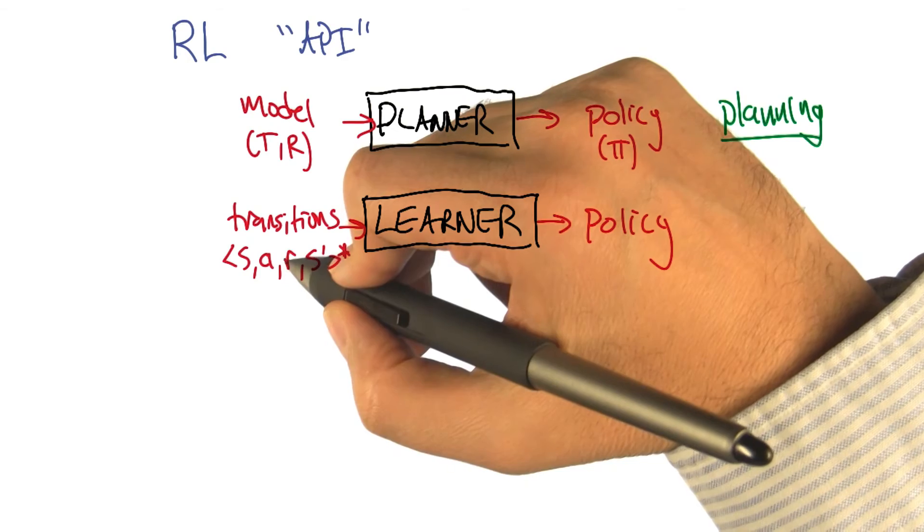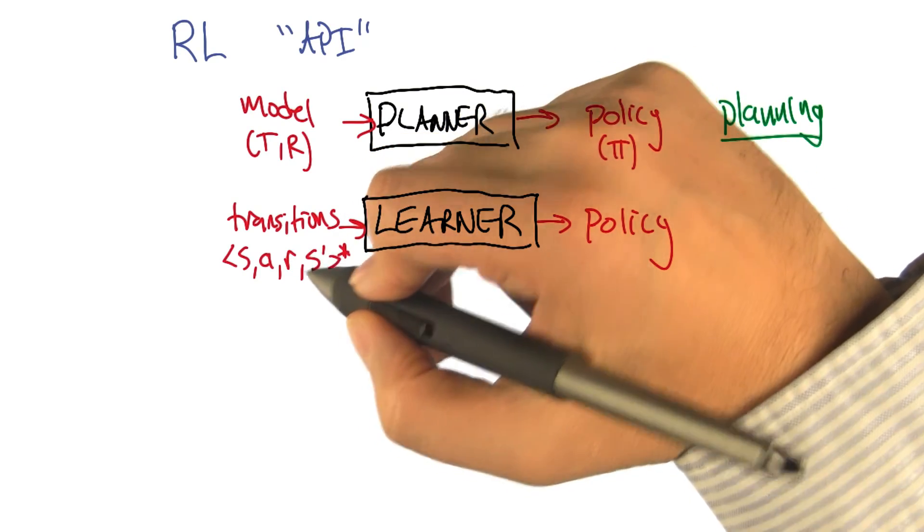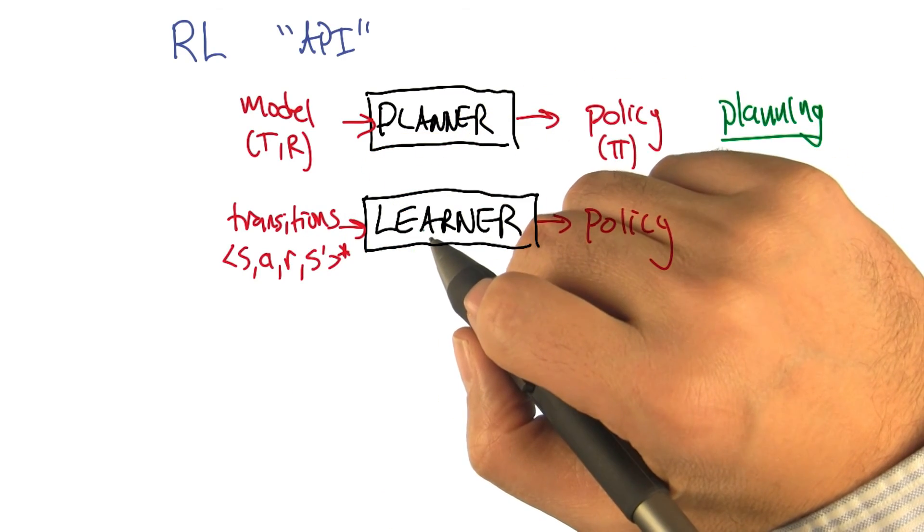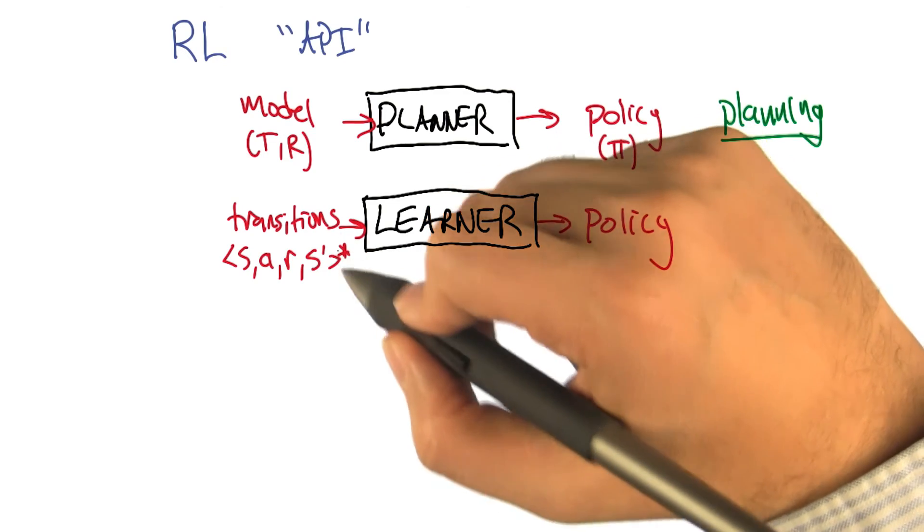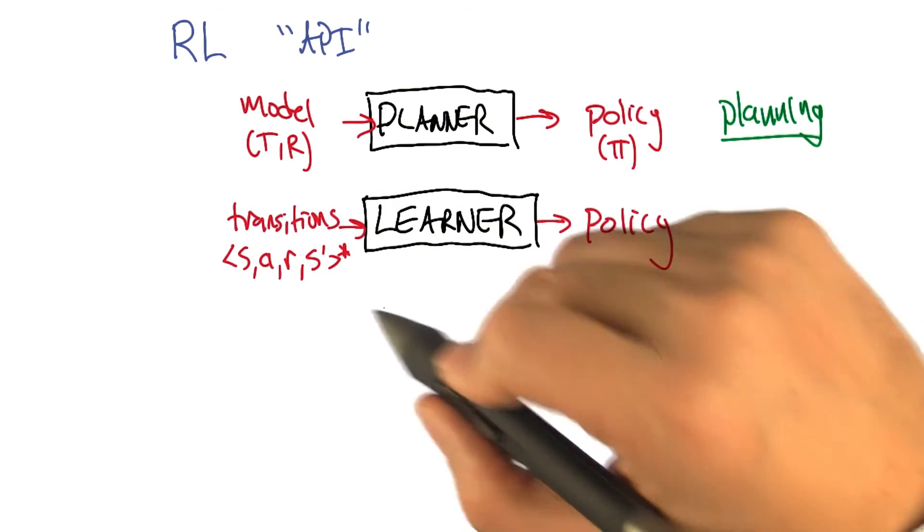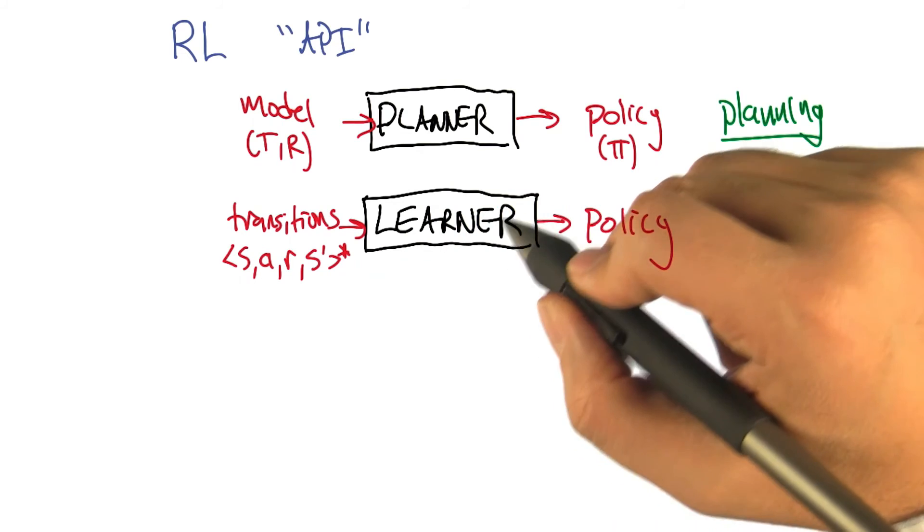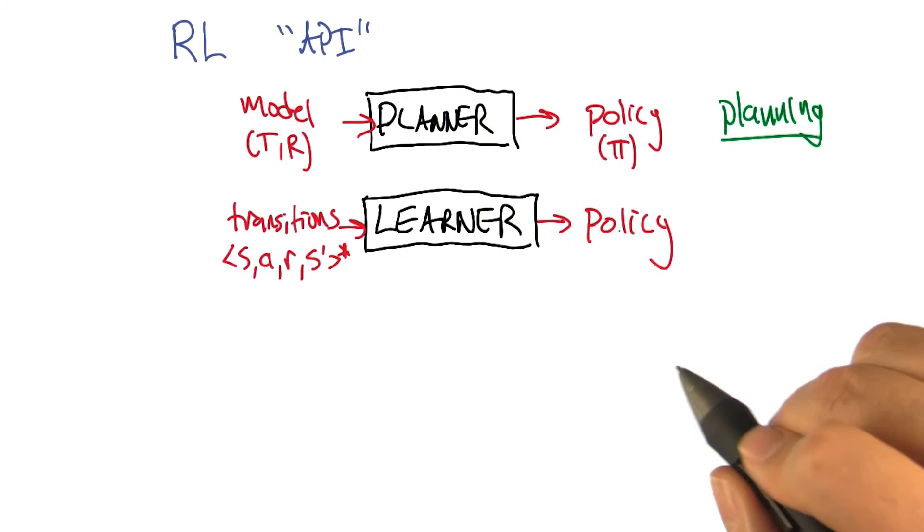It's going to take samples of being in some state, taking some action, observing a reward, and observing the state that is at the other end of that transition, all right? And I put a little star on that to say, well, we're going to see a bunch of these transitions. And using that information, we're going to, instead of computing a policy, we're going to learn a policy.